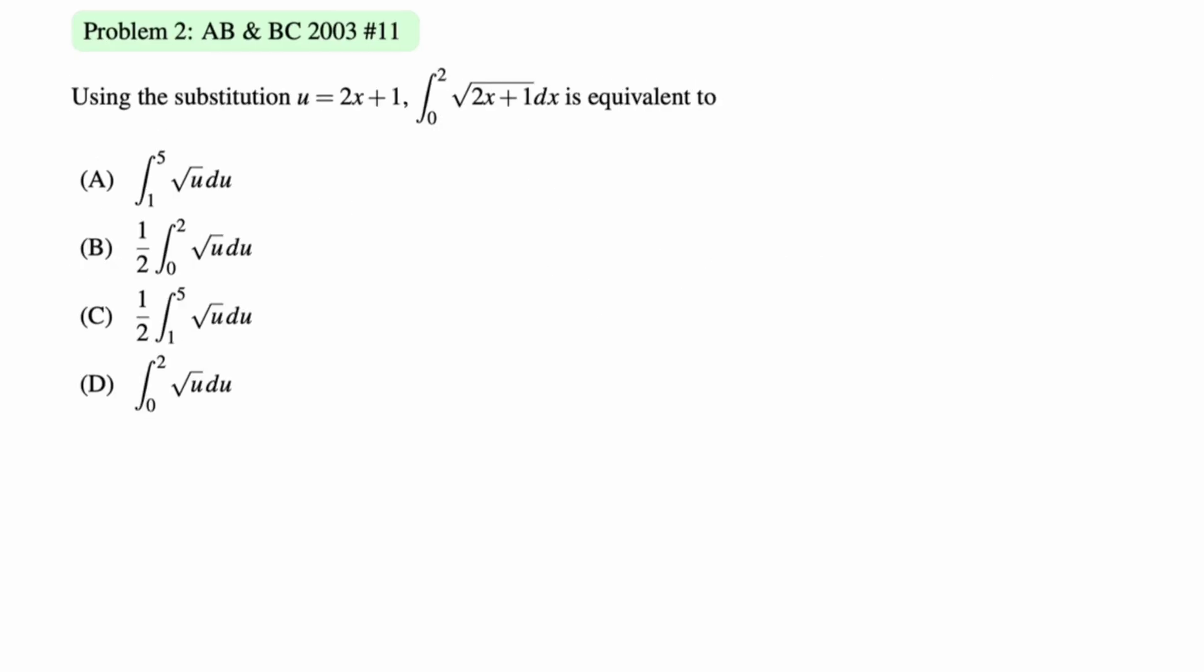Using the substitution u is equal to 2x plus 1, the integral from 0 to 2 of square root of 2x plus 1 dx is equivalent to which of the following? We need to change the bounds and we need to replace dx. Those are the two mistakes that people will make from time to time. First, we're going to say if x is equal to 2, then u is equal to 5. Then we'll say if x is equal to 0, then u is equal to 1, right? And we're getting that because u is equal to 2x plus 1.